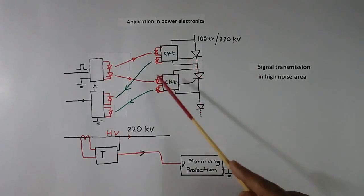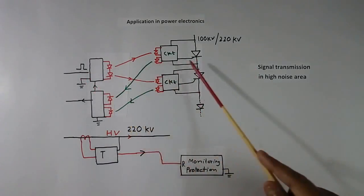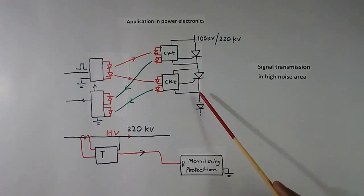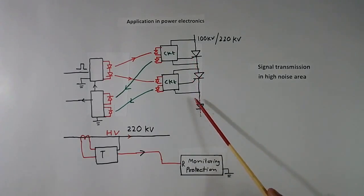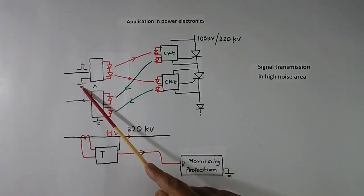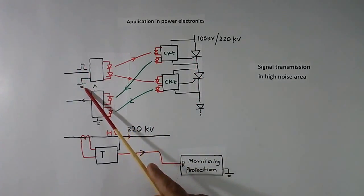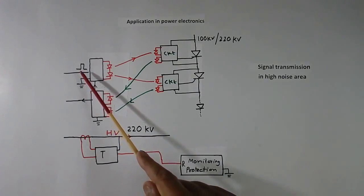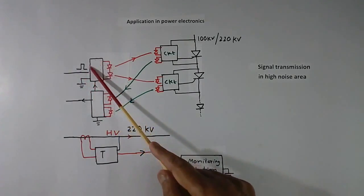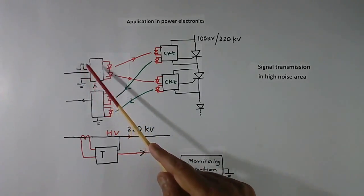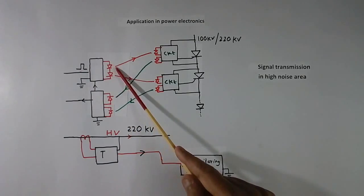Our purpose is to trigger all thyristors at the same time using a signal available at earth voltage. Here, we convert this electrical signal into an optical signal.